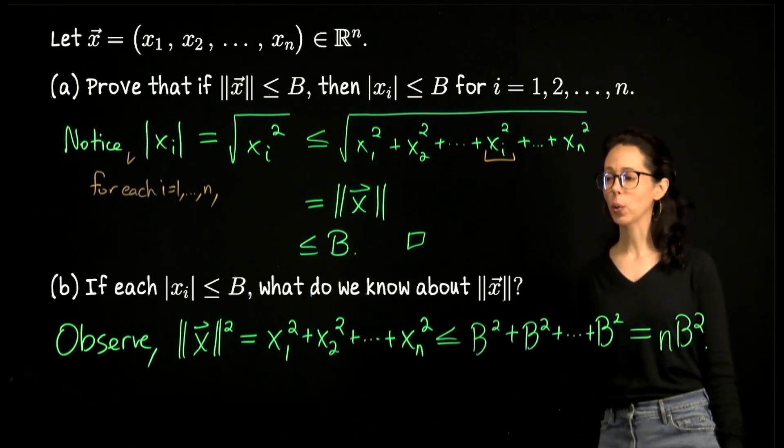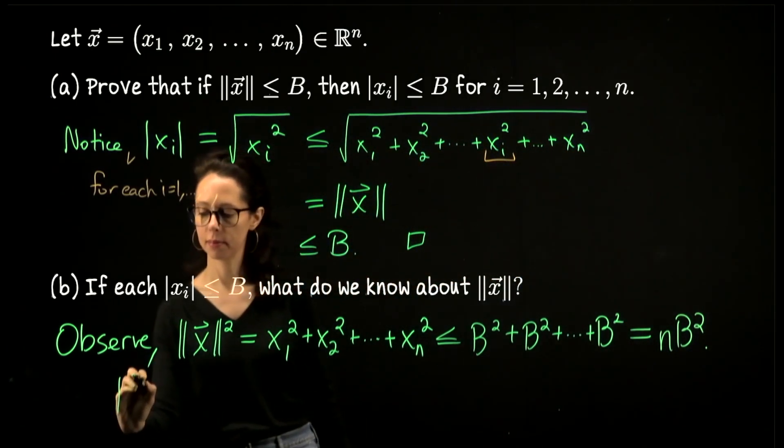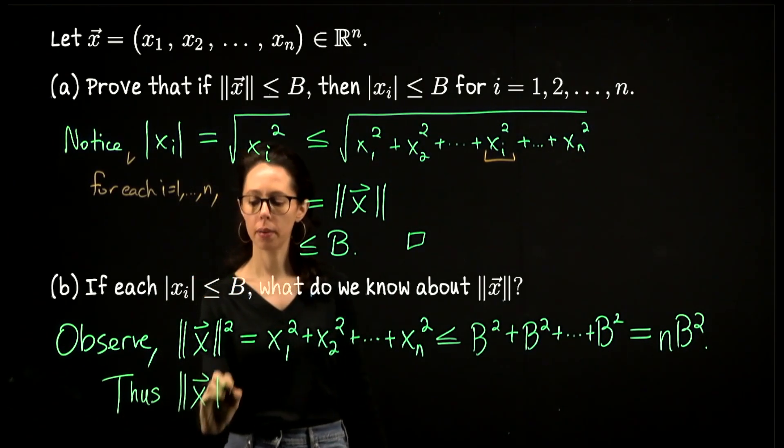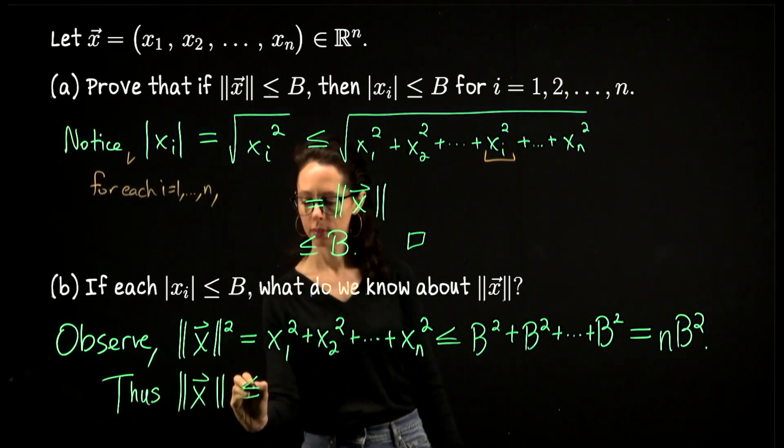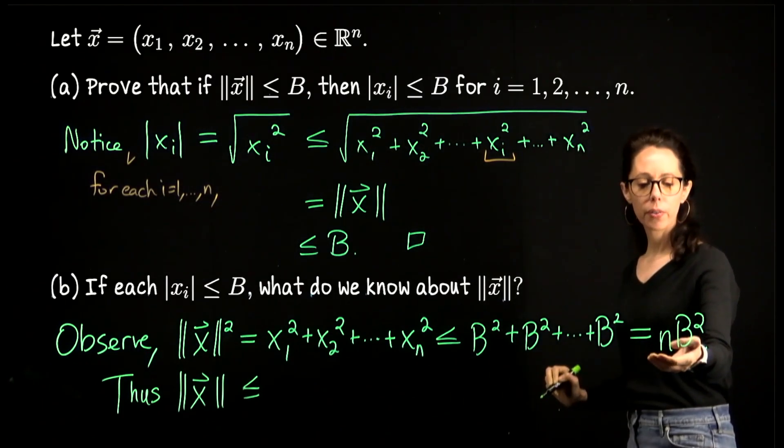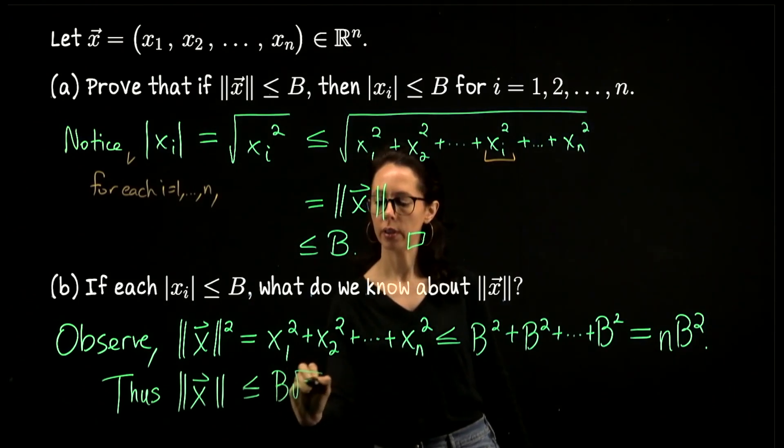So that's a statement about the square of the norm. Let's just take the square root both sides. Thus, the length or norm of the vector x is less than or equal to the square root of this expression. So that's going to be the square root of n times B, about B times square root of n.